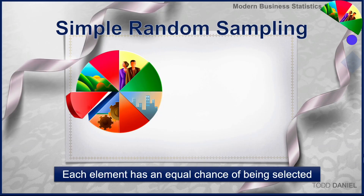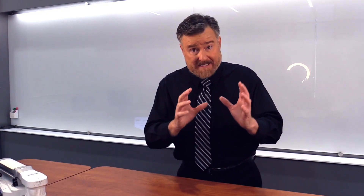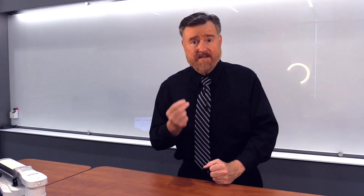Here is our population. In a random sample, each element has an equal chance of being selected. And because every element has an equal chance, there is a greater likelihood that at least one of every element from that population will be represented in our sample. How could we do simple random sampling? In a raffle, we put tickets into a hopper, spin it around, and draw out one ticket at a time.